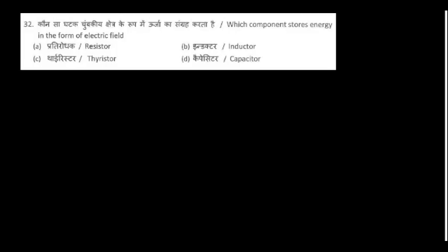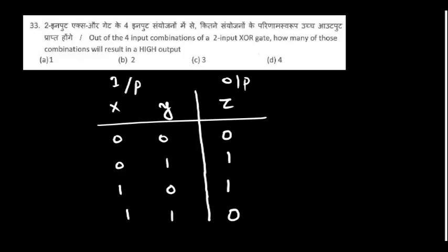Which component stores energy in the form of electric field? It's a capacitor. For the output of a two-input XOR gate with four input combinations, how many of those combinations will result in a high output? Looking at the truth table, two combinations will result in high output.